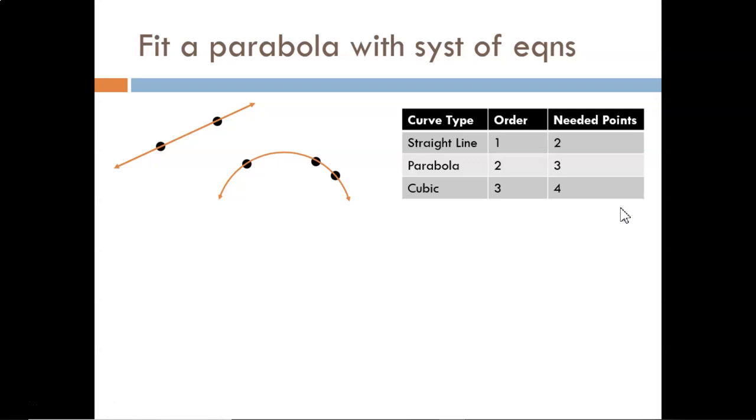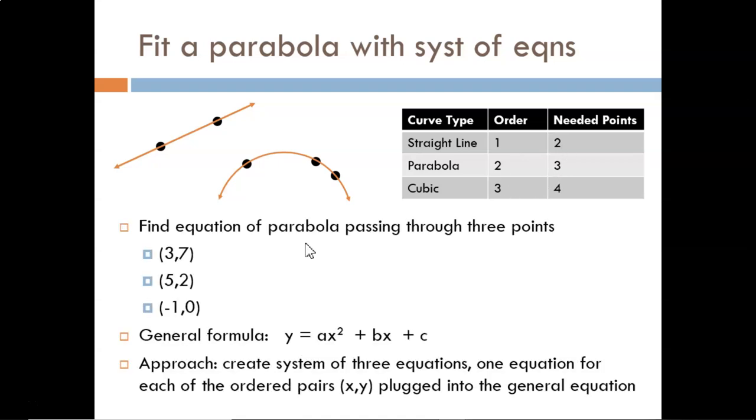This idea can be extended to any order of polynomial. As long as I know enough points, then I can define a curve. Enough points would be one more than the order of the polynomial. Our application demonstrated here is with a parabola, so I am given three points.